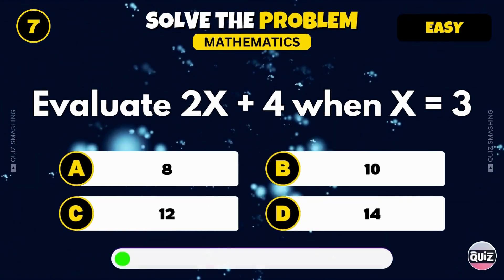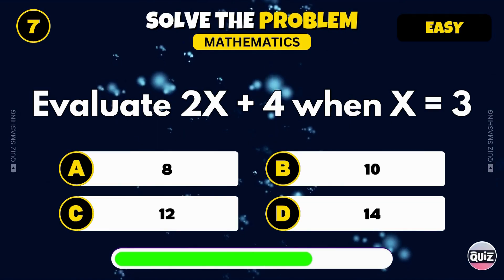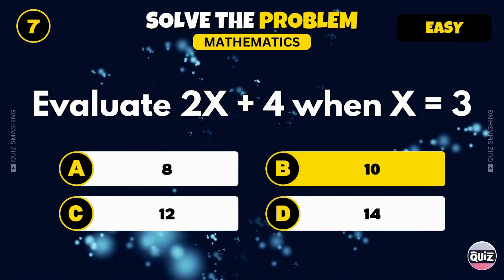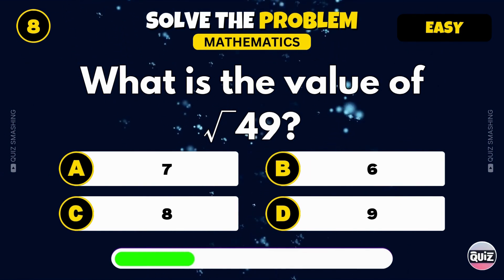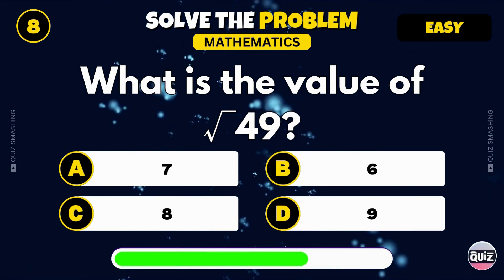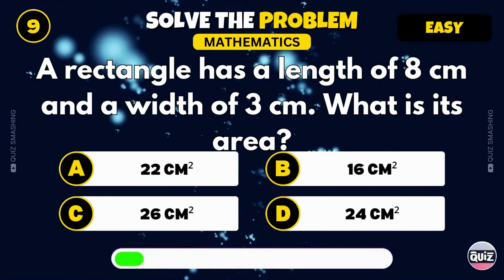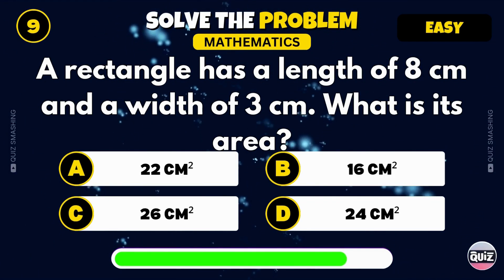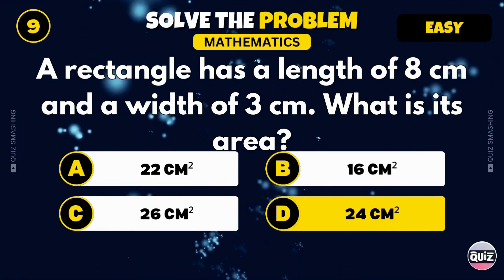Evaluate the expression 2x plus 4 when x equals 3. You got it, the result is 10. What is the square root of 49? That's 7. A rectangle has a length of 8 centimeters and a width of 3 centimeters. What is its area? Correct, the area is 24 square centimeters.